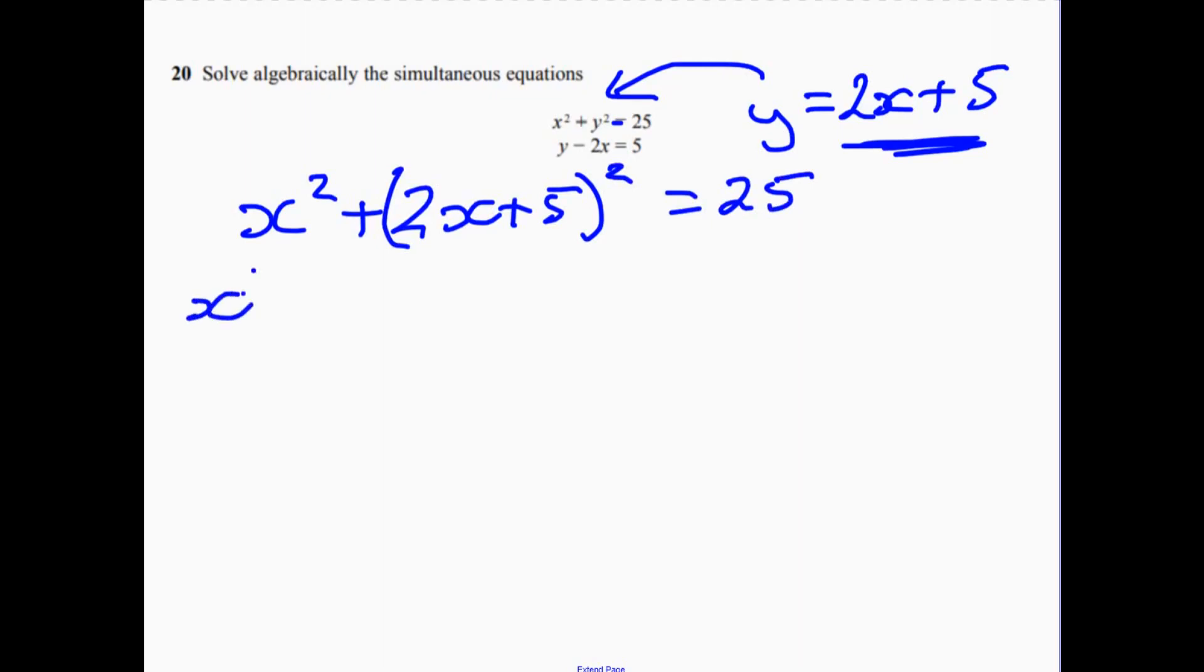Right, so x squared plus... Now be careful when you multiply this out. That's going to be 4x squared plus... Now you've got 10x and 10x there. It's going to happen twice, so we're going to actually have 20x and then plus 25. And then remember the whole thing is equal to 25.